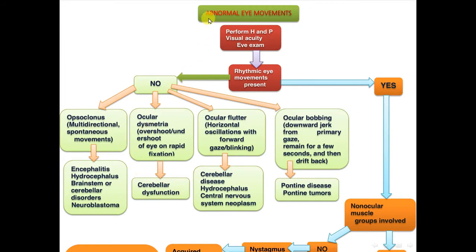When approaching a child with abnormal eye movement after performing history, physical examination, visual acuity, and eye exam: if rhythmic eye movement is not present, this may include opsoclonus — multi-directional spontaneous movement — with differential diagnosis of encephalitis, hydrocephalus, brainstem or cerebellar disorder, or neuroblastoma. Or it may be ocular dysmetria — overshoot or undershoot of the eye on rapid fixation — suggesting cerebellar dysfunction.